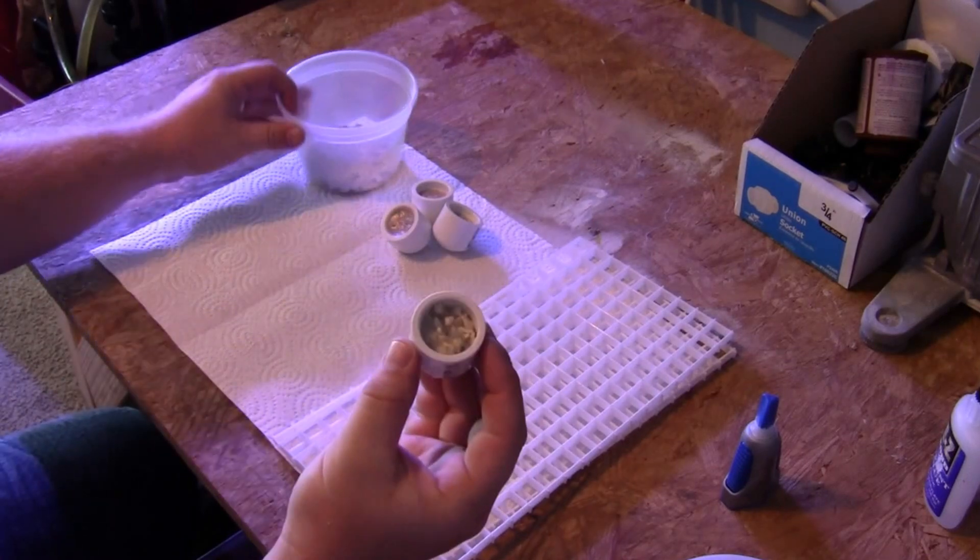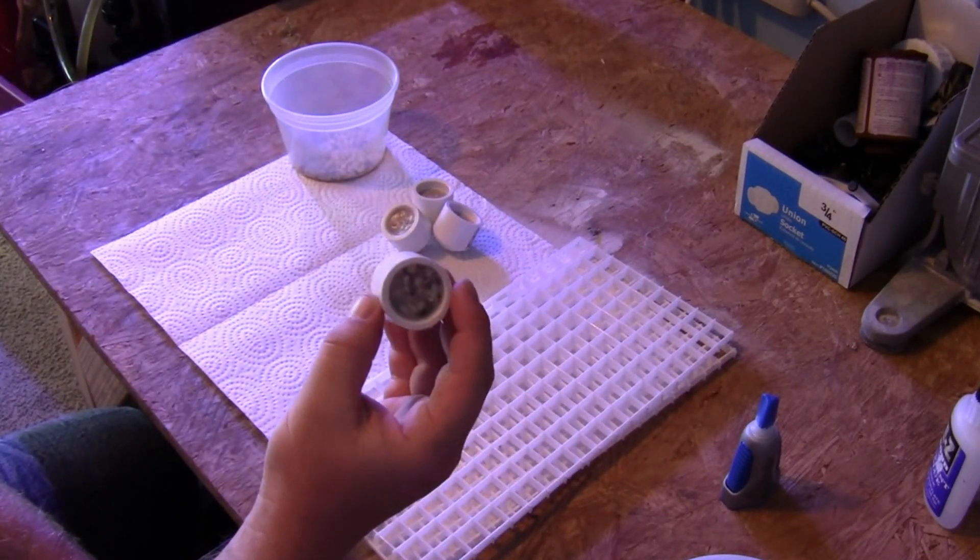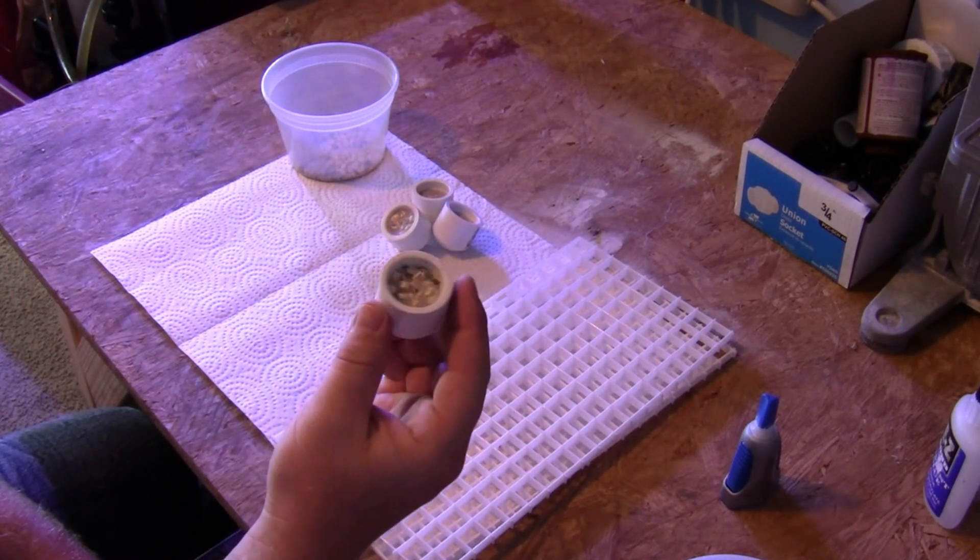As you can see we have also added some crushed coral to the cap. This serves two purposes. It weighs the racks down and keeps them at the bottom of the tank, as well as keeping unwanted critters and organic material from getting into the feet of your frag racks.